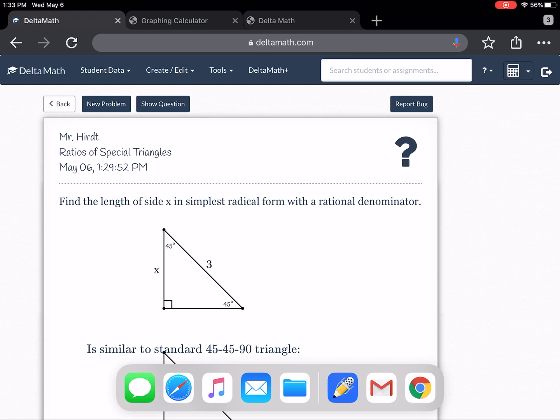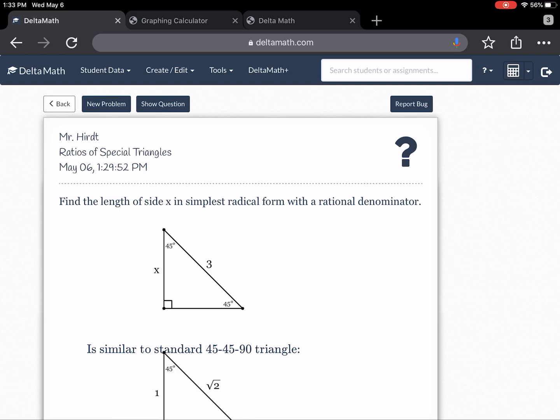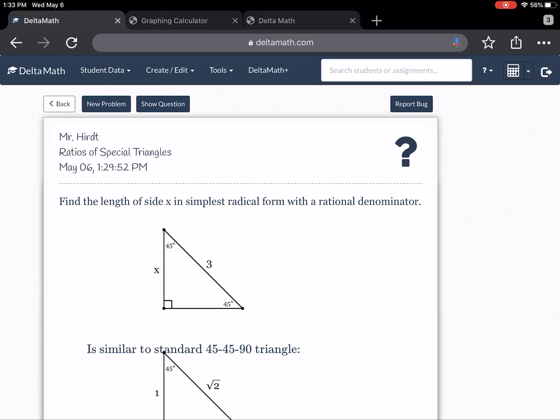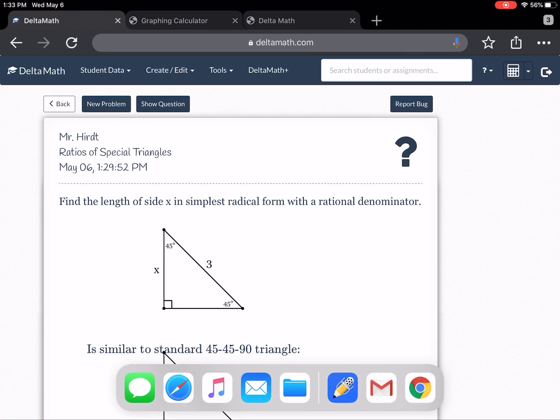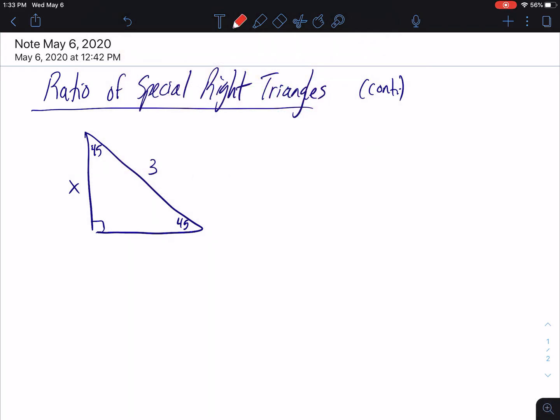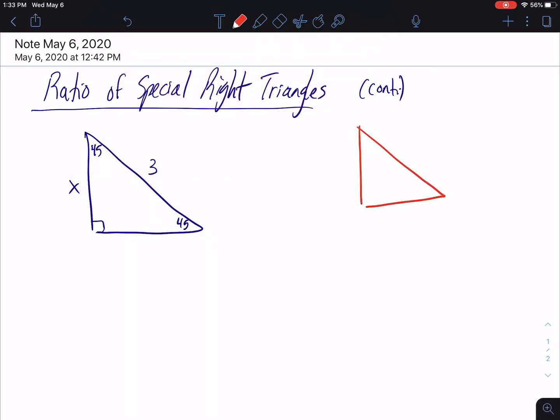In the meantime though, let's take a look at this problem here. We have a right triangle, and it's got 45-45 degree angles. We've got x and three. This is a 45-45 triangle, so there were two triangles that we wanted to memorize. One of them happens to be a 45-45-90 right triangle.